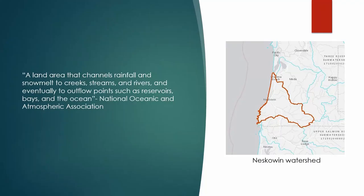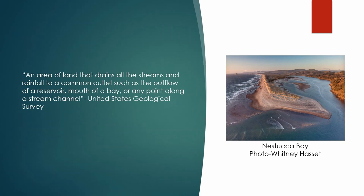The National Oceanic and Atmospheric Association describes a watershed as a land area that channels rainfall and snowmelt to creeks, streams, and rivers, and eventually to outflow points such as reservoirs, bays, and the ocean. Similarly, the United States Geological Survey describes a watershed as an area of land that drains all the streams and rainfall to a common outlet such as the outflow of a reservoir, mouth of a bay, or any point along a stream channel.